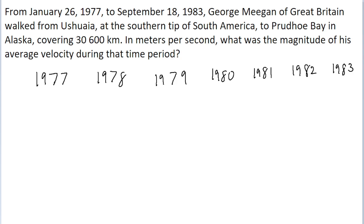So for 1977, he started walking on January 26th. So 365 days in a typical year, but for the year of 1977, we can disregard the first 25 days of January because he wasn't walking during that period. So 365 minus 25, that's 340 days for 1977.